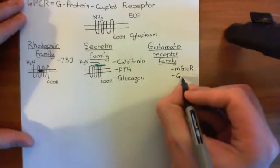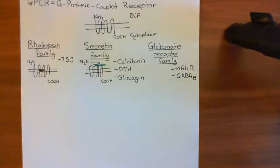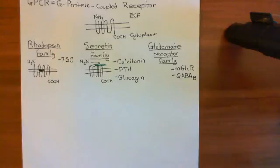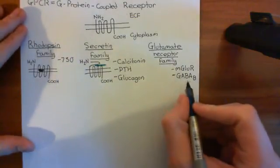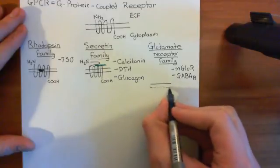Other examples in the glutamate family include the GABA-B receptors. GABA is the most important inhibitory neurotransmitter in the brain — it represses action potentials in the postsynaptic neuron. Most GABA receptors are ligand-gated ion channels, specifically members of the cys-loop ligand-gated ion channel family. But the GABA-B receptors are G-protein coupled receptors and are classified within this glutamate family of GPCRs.